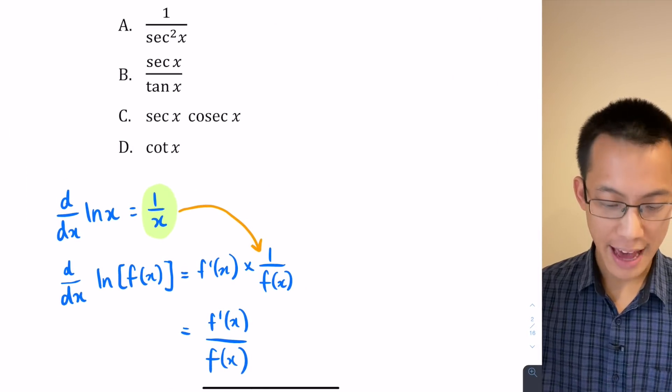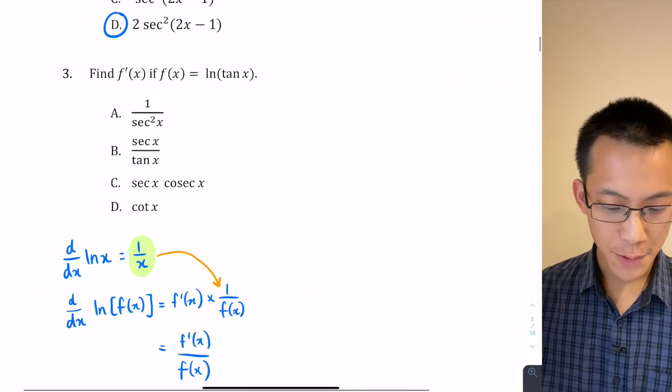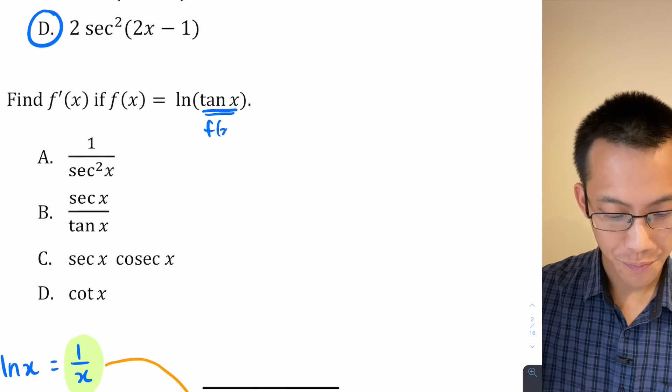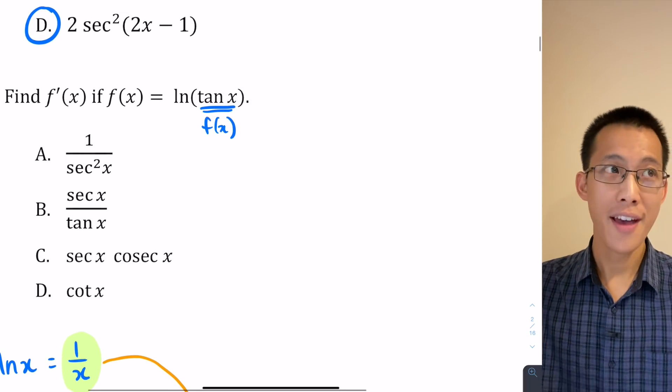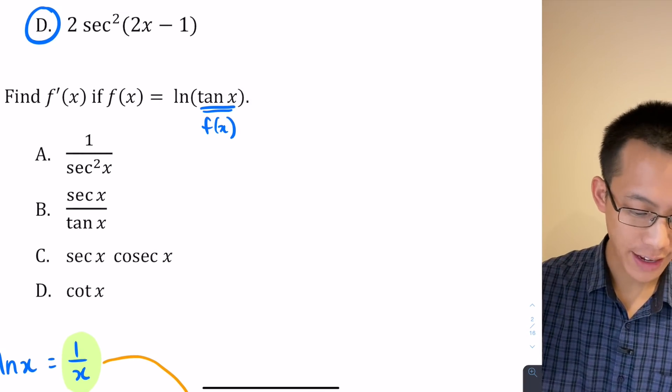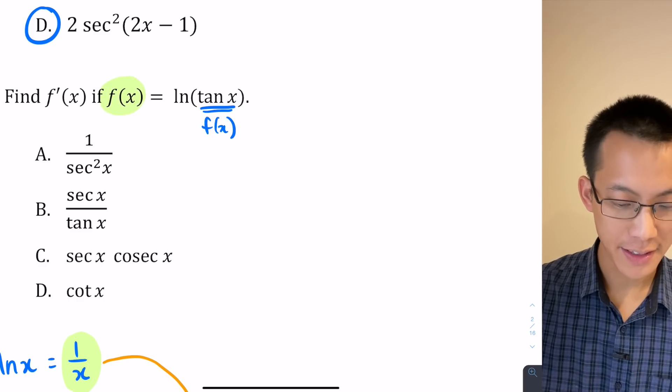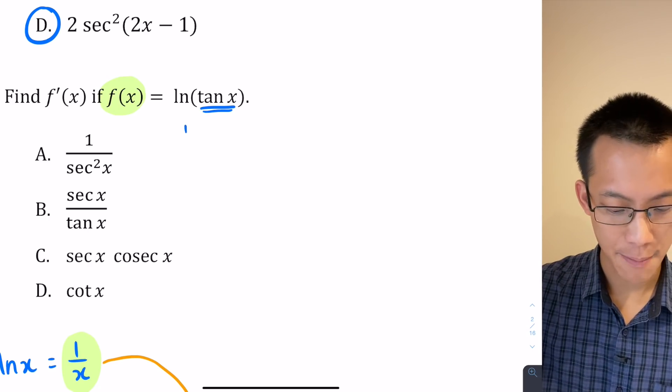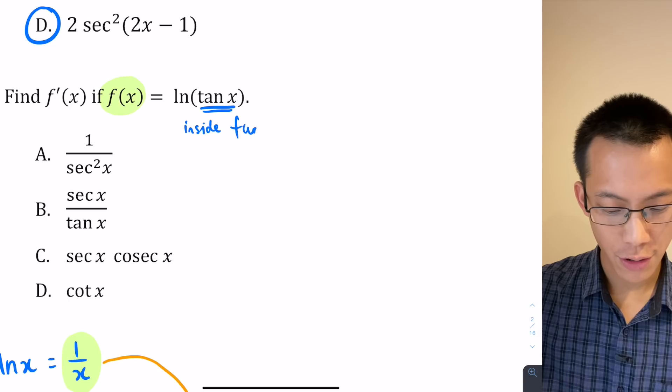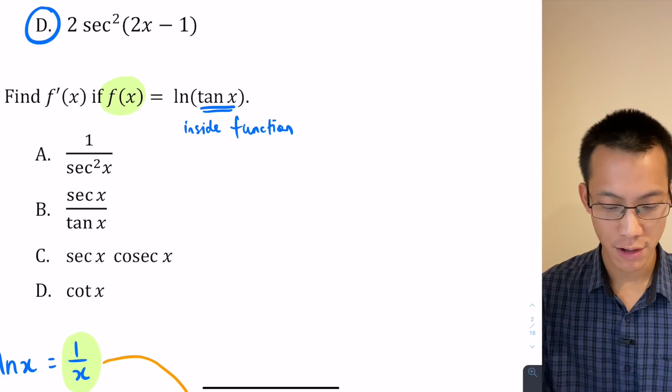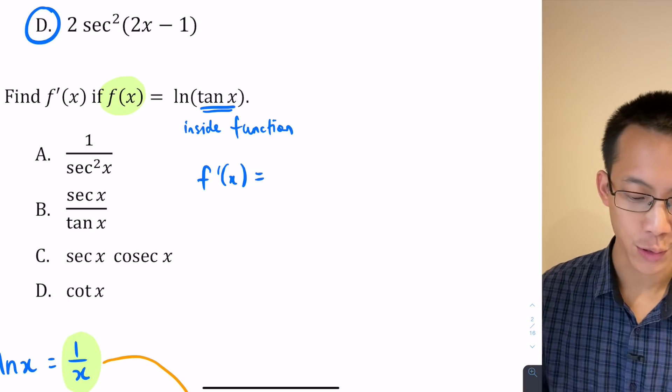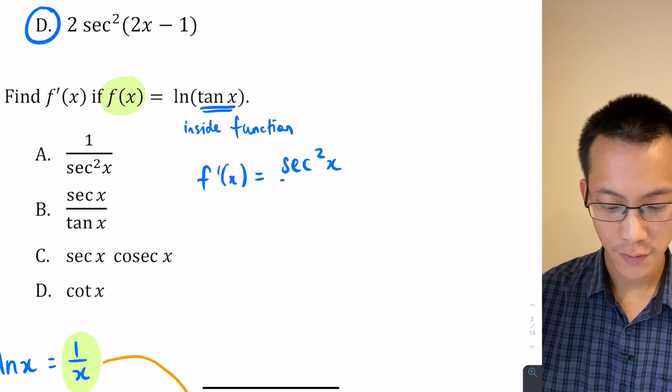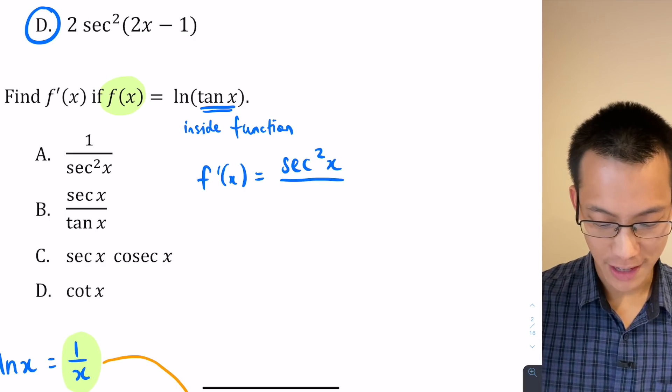So now if I want to use that for this particular question, let's have a look. I'm doing log of tan x, so inside the brackets, that is my f(x) right there. Or should I say that's the f(x) as using the reference sheet. I have to be quite careful here because this f(x) has actually been used in the question already, so I guess I can just call it the inside function; that might be a less ambiguous way to say it. So now when I go to use the reference sheet's result here, f'(x) is going to be equal to derivative of the inside function, which is sec²x, divided by the inside function, which is tan x.